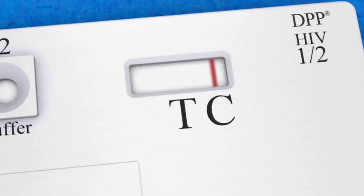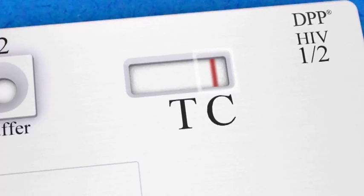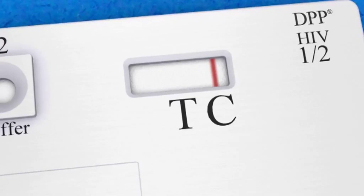First, make sure that a reddish control line has formed above the T marking in the test window. If no control line is visible, then the test is invalid and a new test must be run.